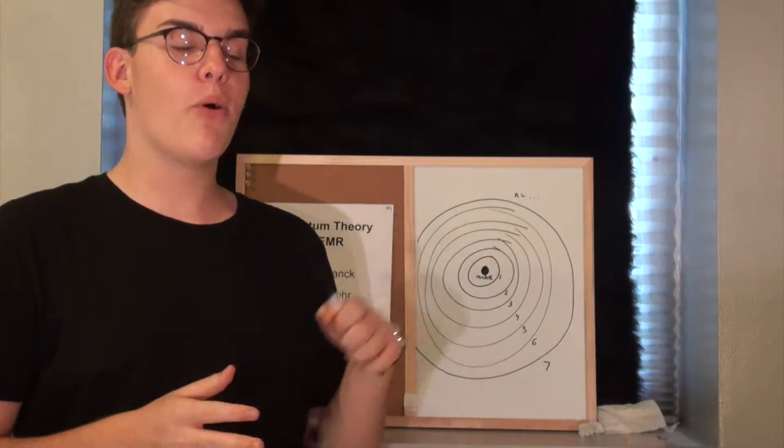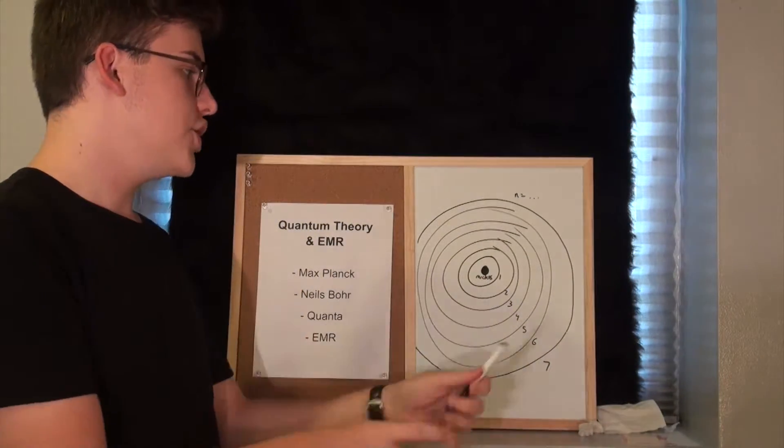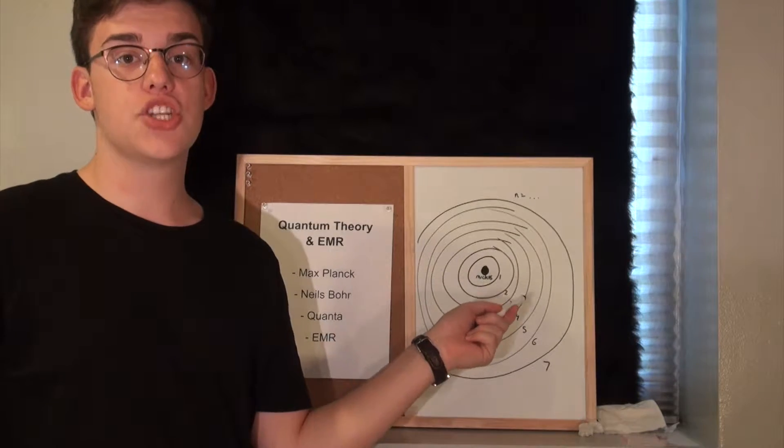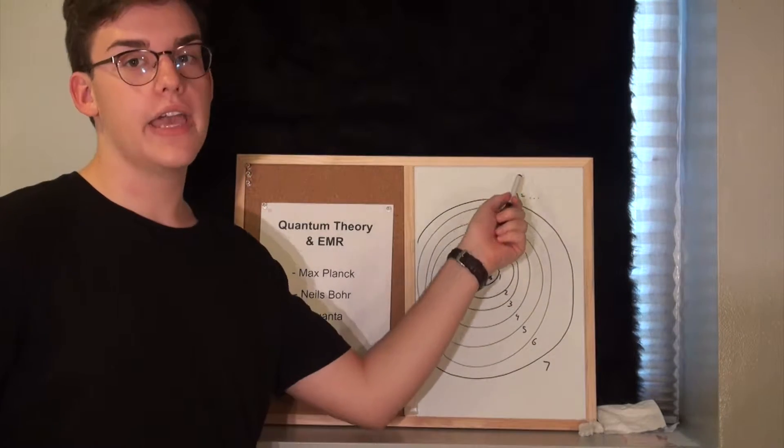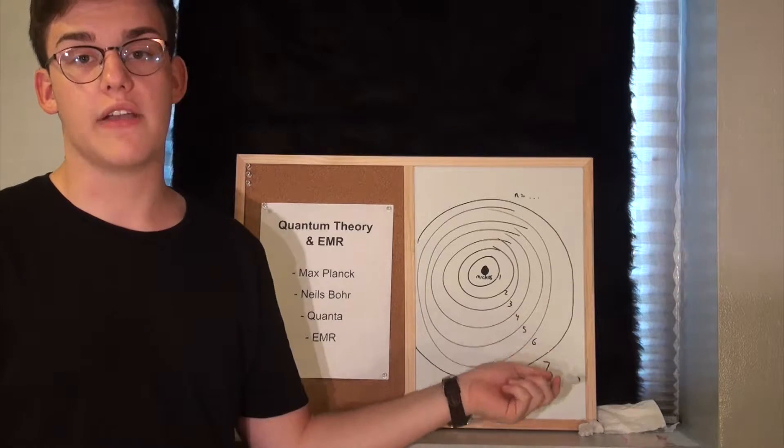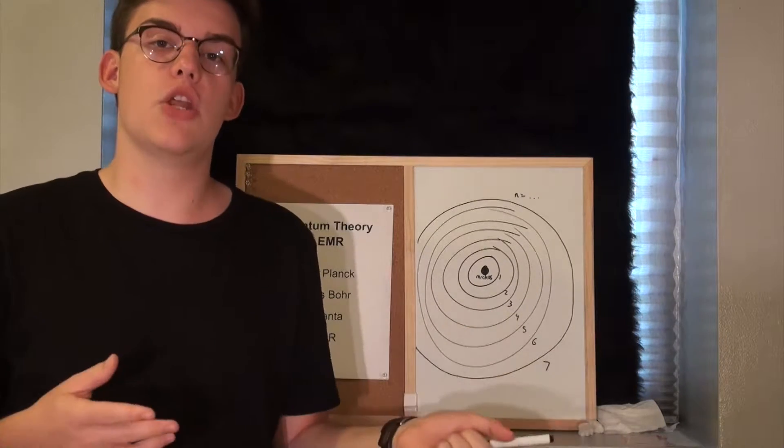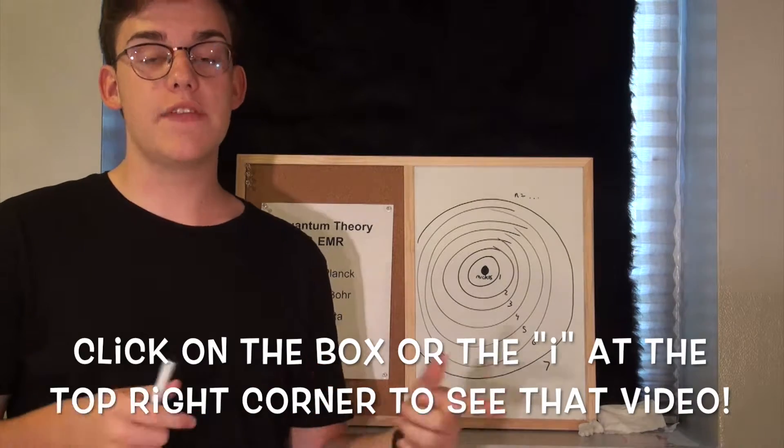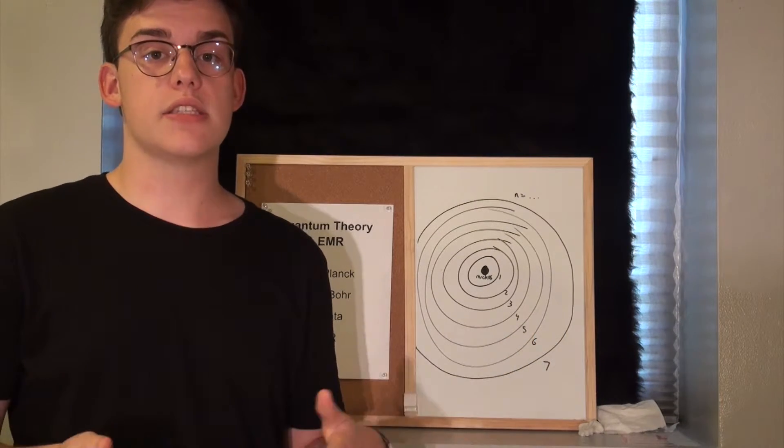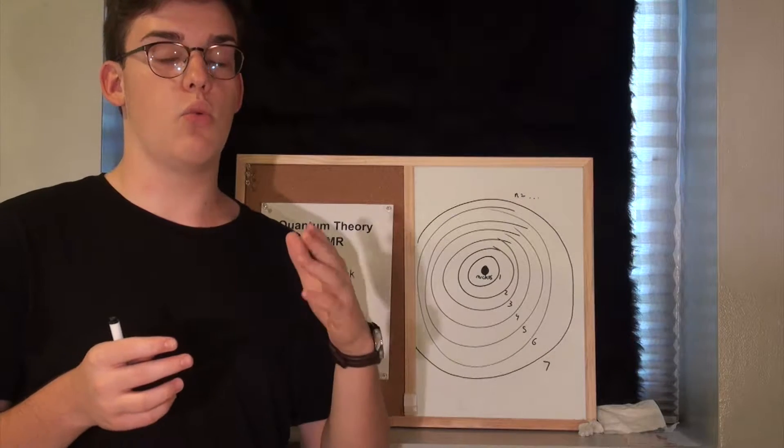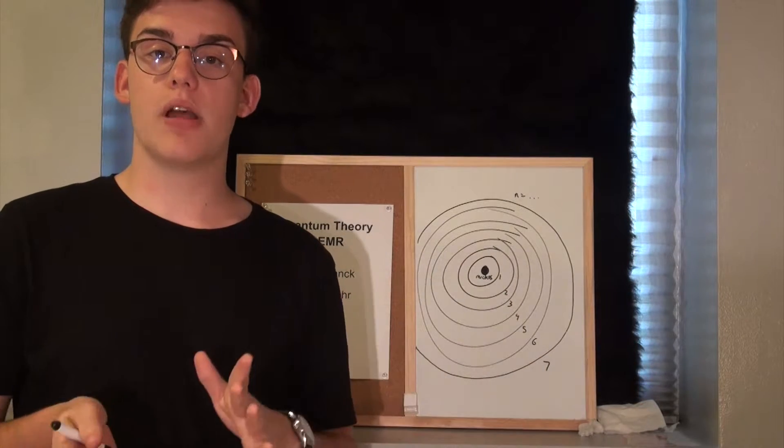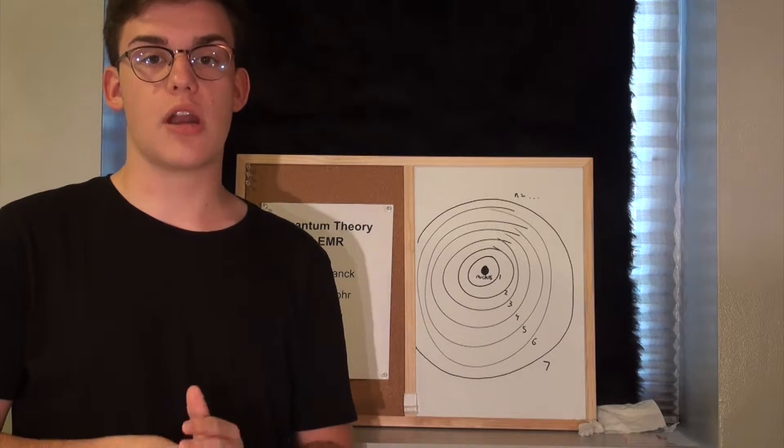As you can see in this very poorly drawn diagram, in the center you have your nucleus. Each energy level, designated by N equals 1, 2, 3, 4, 5, 6, 7, represents a row on the periodic table, which I did a video about a few weeks ago. Fittingly, there are seven known energy levels, called N equals 1 to 7, that corresponds with each of the seven periods on the periodic table.